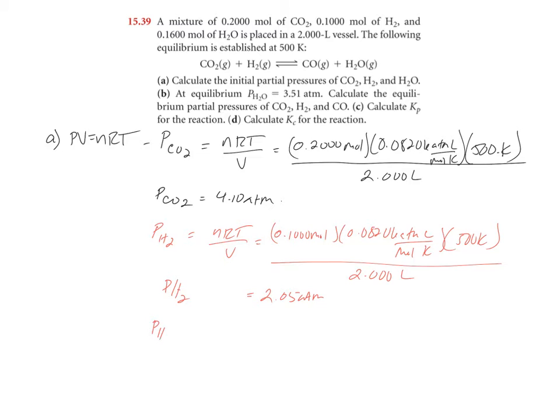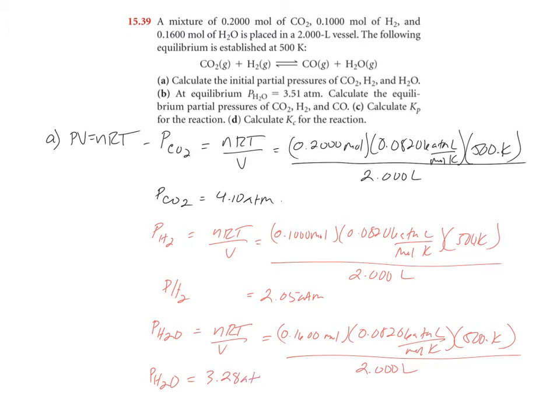And lastly, for H2O. Same equation, nRT over V. H2O is 0.1600 moles times R. And your pressure of H2O is 3.28 atmospheres. That's how you would do part A.